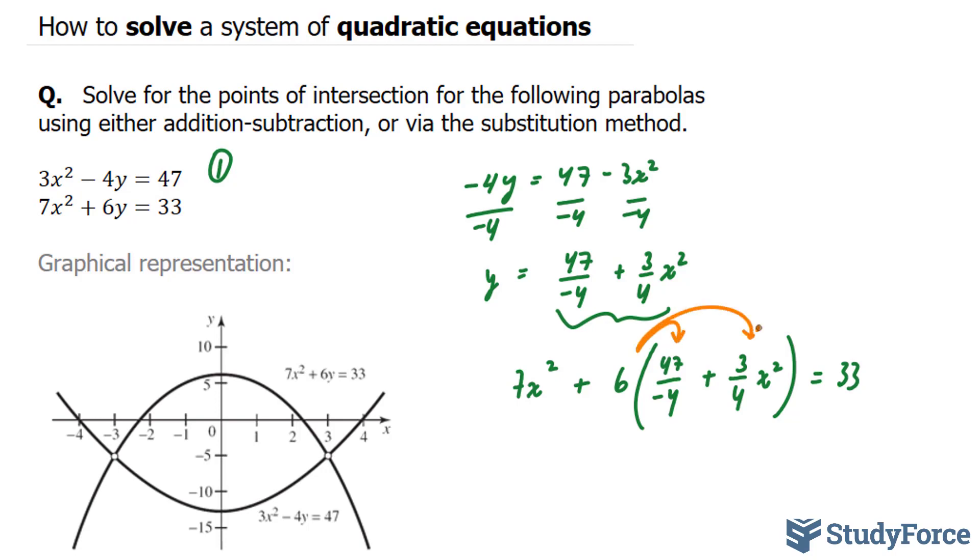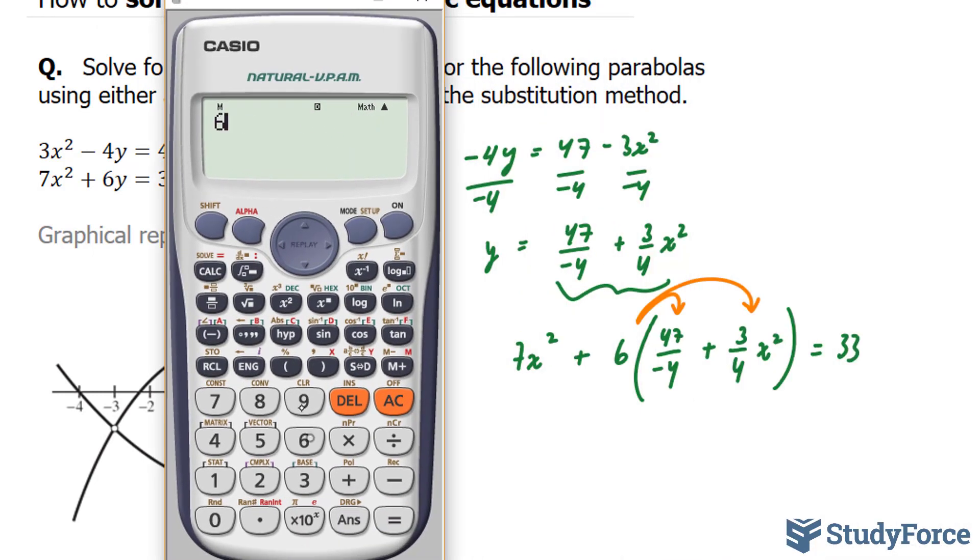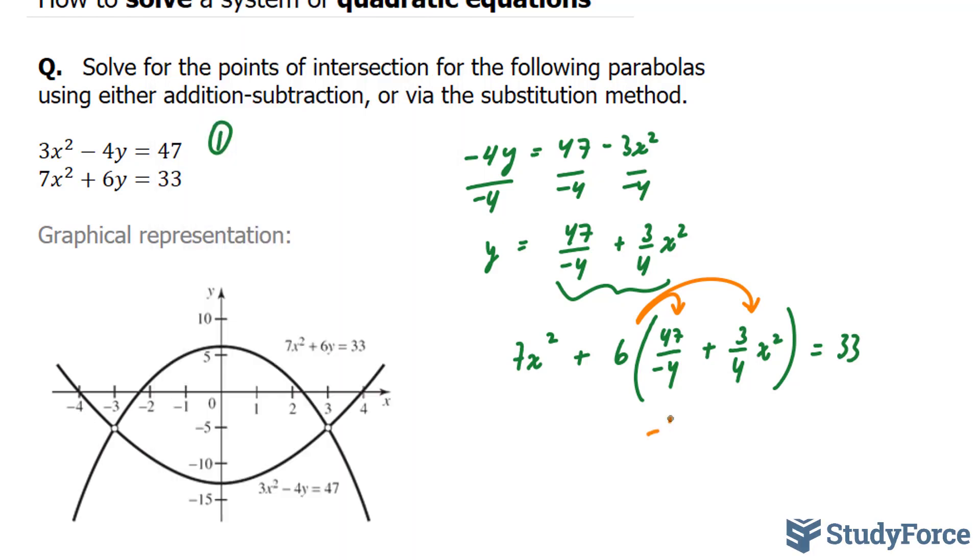is I will multiply the 6 into the binomial to its right. And I'm going to use my calculator for 6 times 47 over negative 4. That gives me negative 70.5 or negative 141 over 2. I prefer to use fractions. Plus 6 times 3 is 18 over 4. And that reduces to 9 over 2. If you can't do it as quick as I can, you can always use your calculator. x squared is equal to 33. And we have a negative here and a plus. So I will use only the negative.